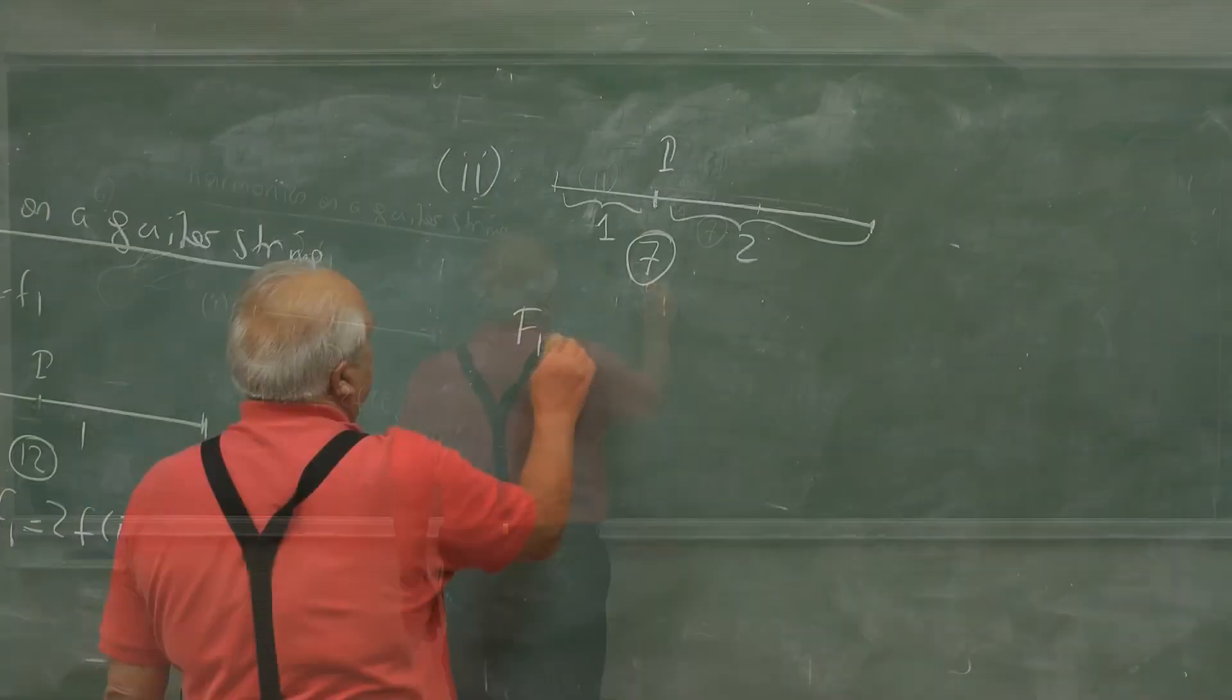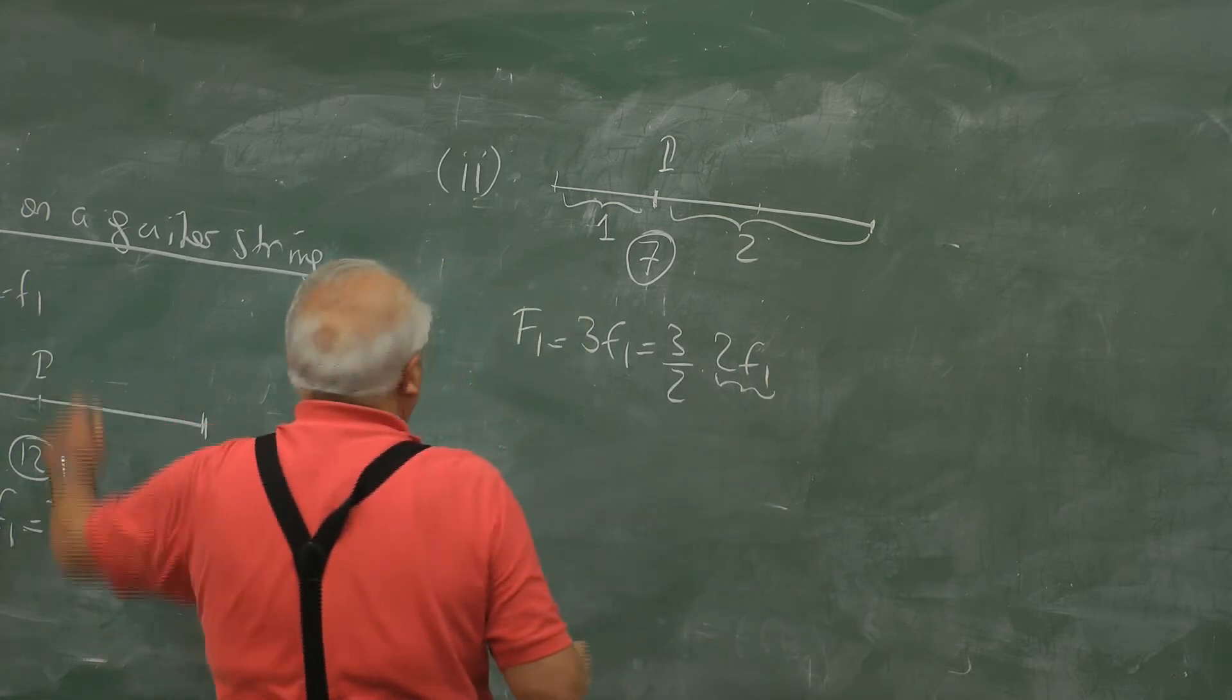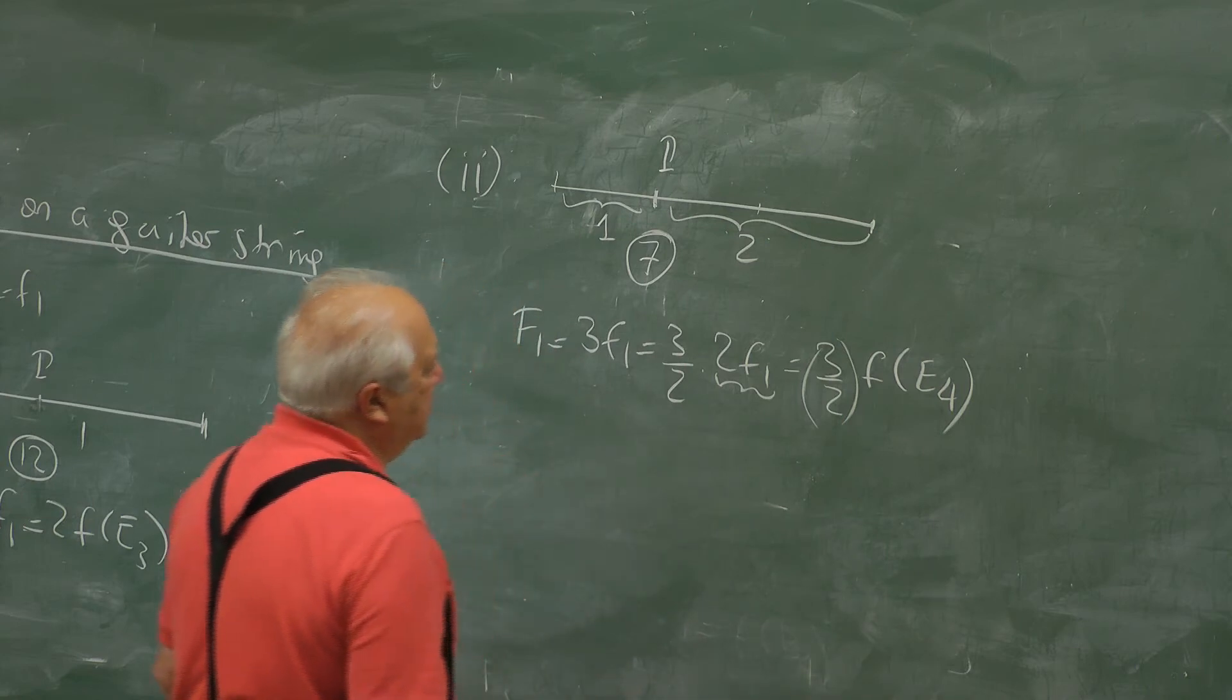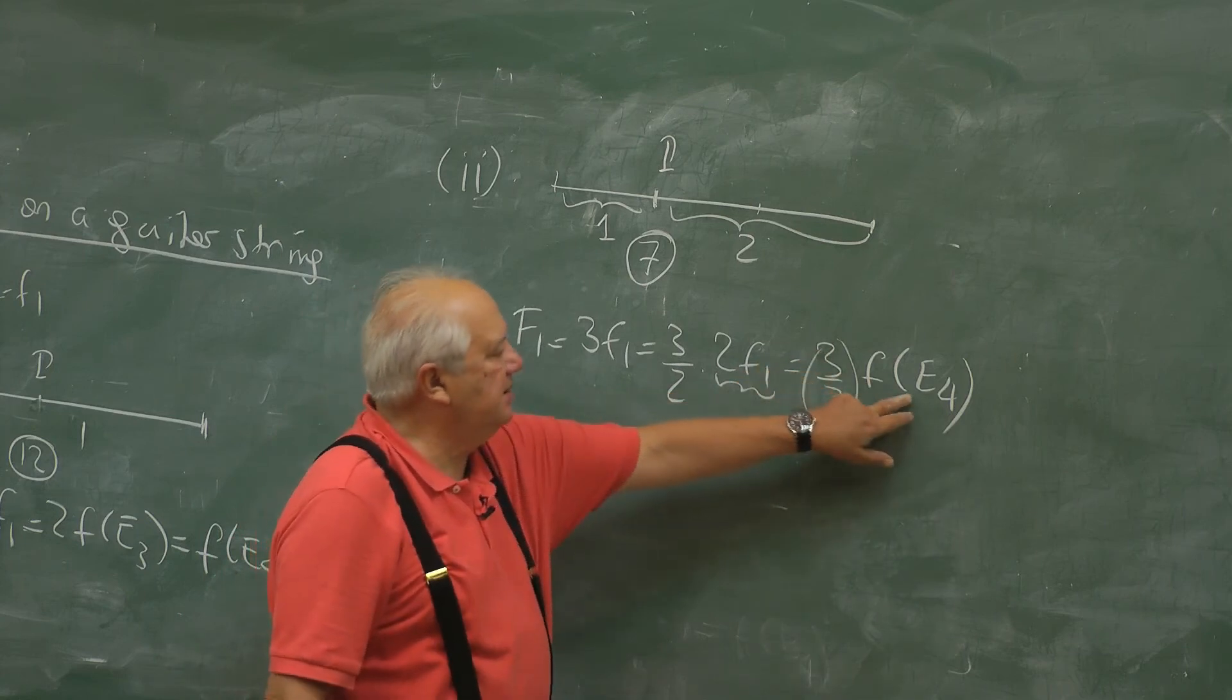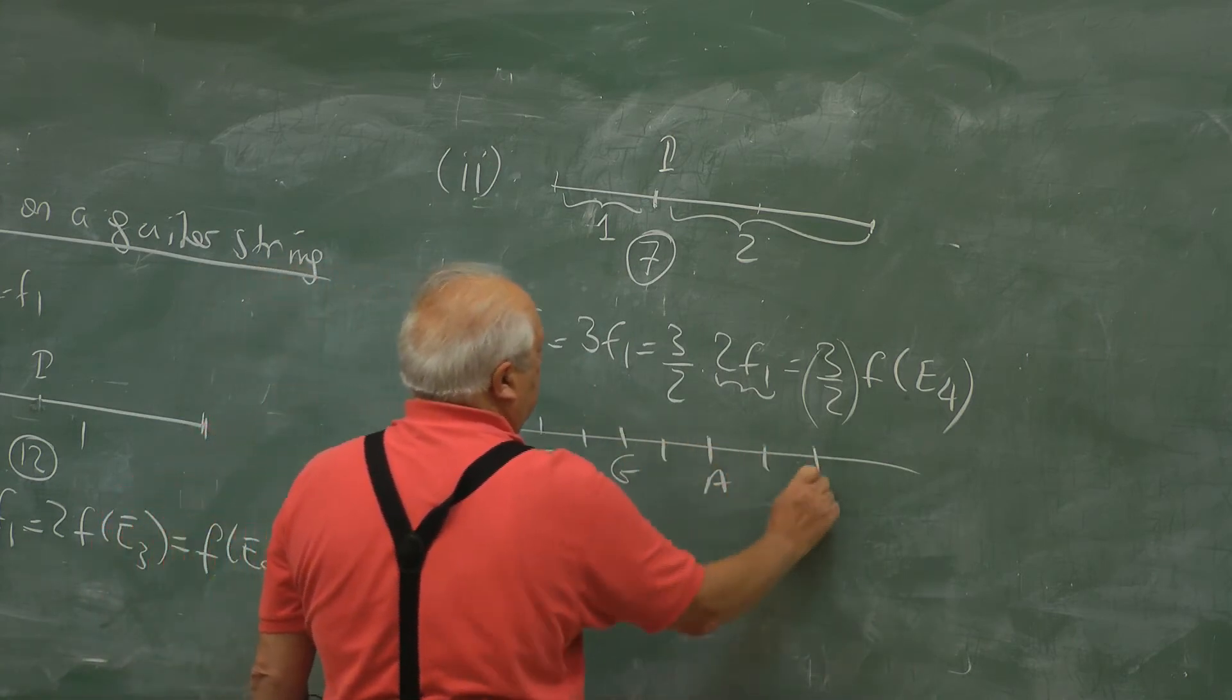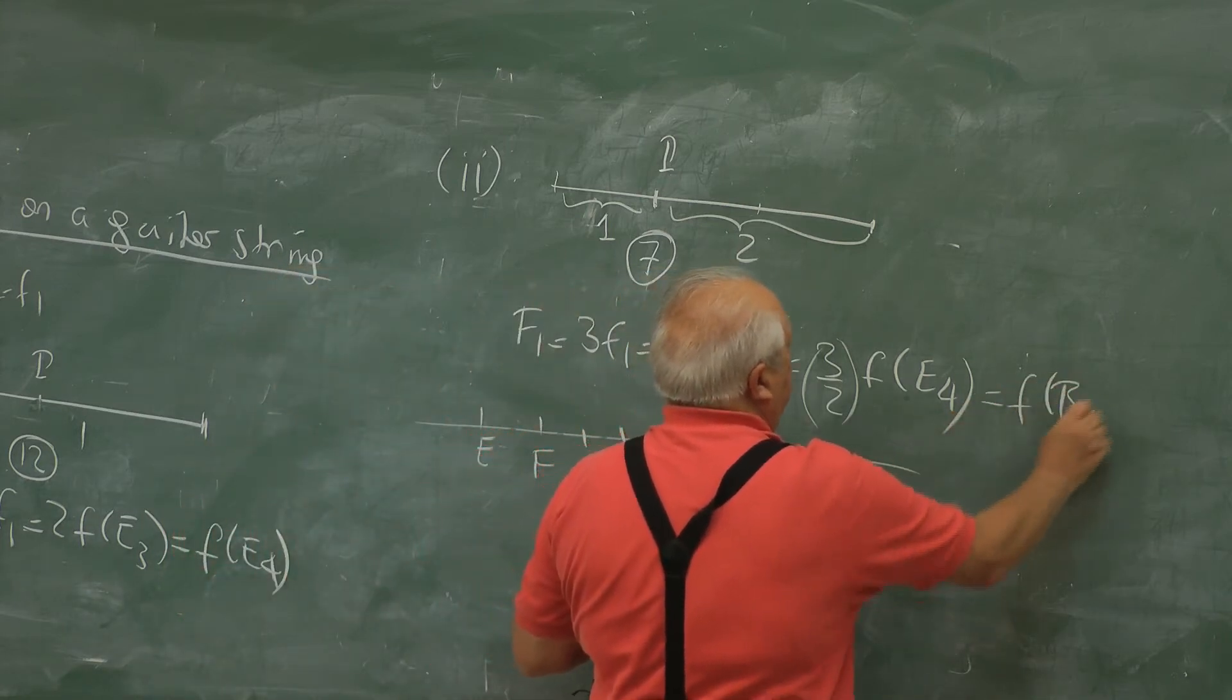F1 is 3F1. It is 3 over 2 times 2 F1. This is an octave above. F1 is Fe3. So this is 3 over 2, Fe4. And this is semitones. This is a perfect fifth higher than E4. So let me just draw the scale again. E, F, G, A, B. 1, 2, 3, 4, 5, 6, 7. We started from E4.